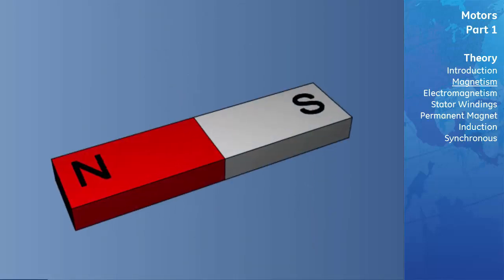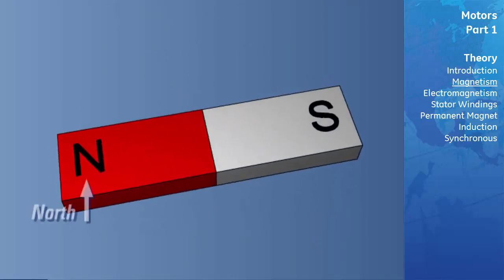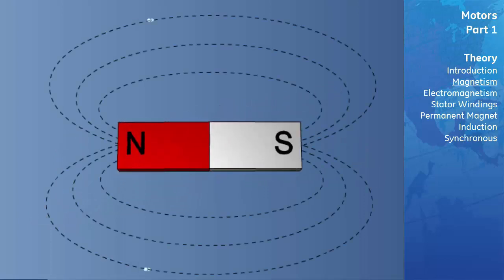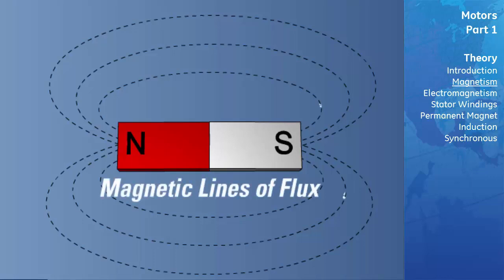Magnets have two poles. One is called the north, while the other is called the south pole. In this picture, we can see dotted lines that run from one pole to the other. These lines represent the magnet's force called magnetic lines of flux. These lines of flux are closed loops that by convention run from the north pole to the south pole, returning to the north pole through the magnet.